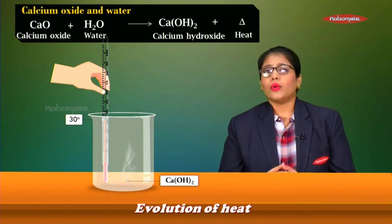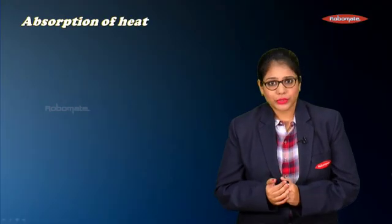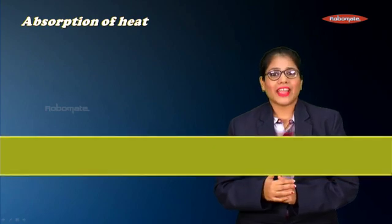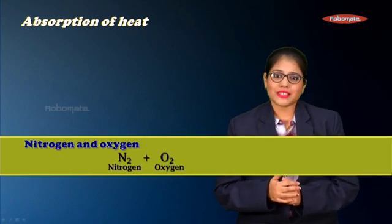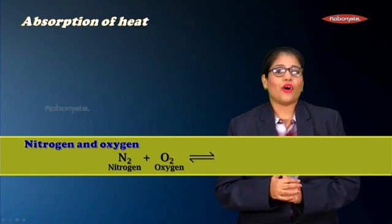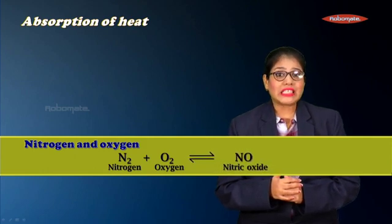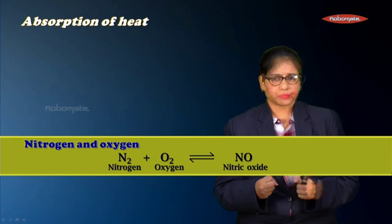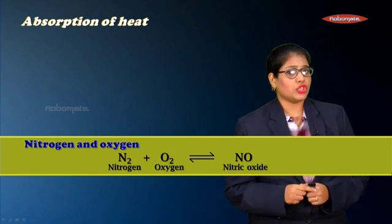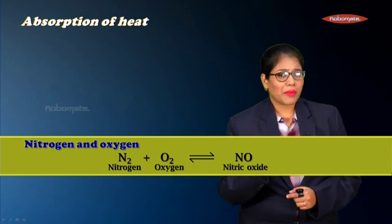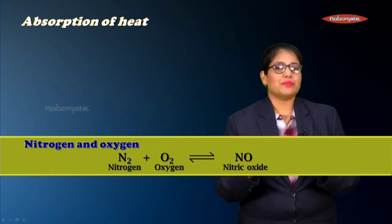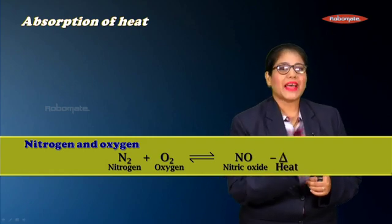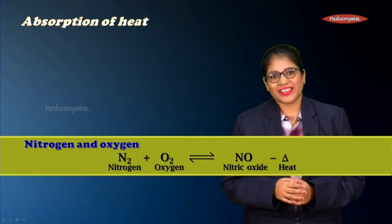Now let's look at an example where heat is absorbed. When nitrogen reacts with oxygen to give nitric oxide (NO), this is an example of a reaction where heat energy is absorbed. When heat energy was evolved, we added +Δ; when heat energy is absorbed, we add −Δ in front of the reaction.